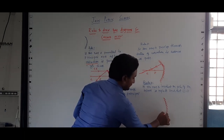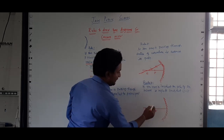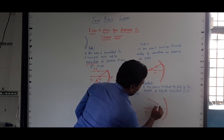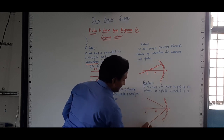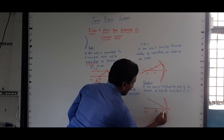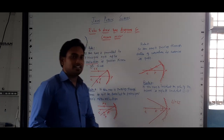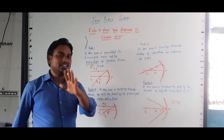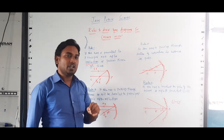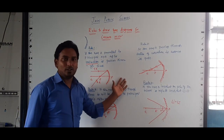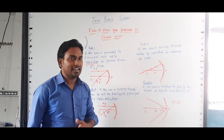For the concave mirror diagram, we draw the principal axis, focus, and center of curvature. If the ray falls on the pole, it reflects such that angle i is equal to angle r. These are the 4 rules — if you know these 4 rules, you can easily draw ray diagrams for concave mirrors. In the next class we will see how to draw ray diagrams using these rules for all 6 cases. Thank you, have a nice day.